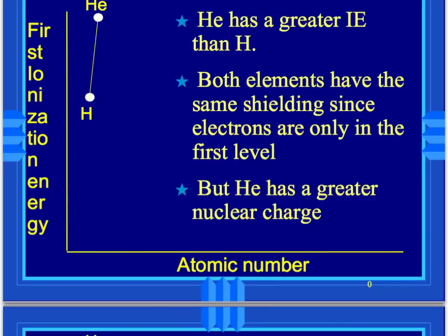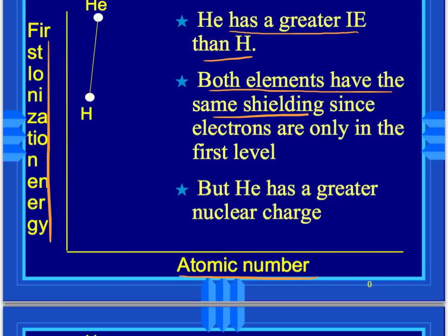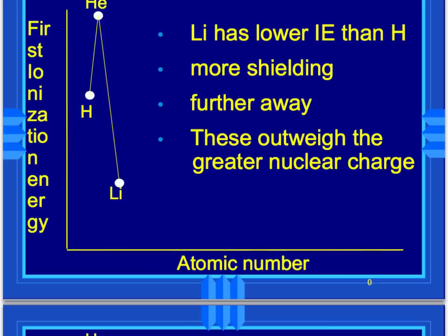Here is a chart we completed in class showing first ionization energy versus atomic number. Helium has a greater ionization energy than hydrogen because it has more protons and its orbital is already full — both have the same shielding since electrons are only in the first level. Lithium has a lower ionization energy than hydrogen because of more shielding and greater distance from the nucleus, and these factors outweigh the greater nuclear charge. Distance plays a more important role than nuclear charge for ionization energy.